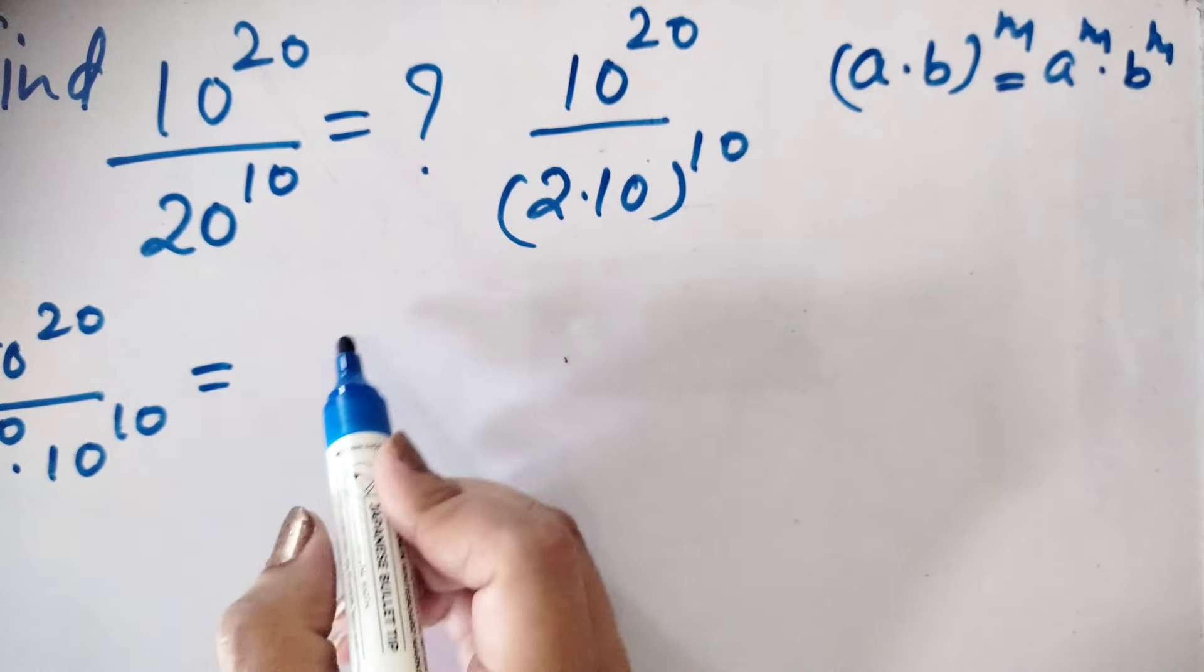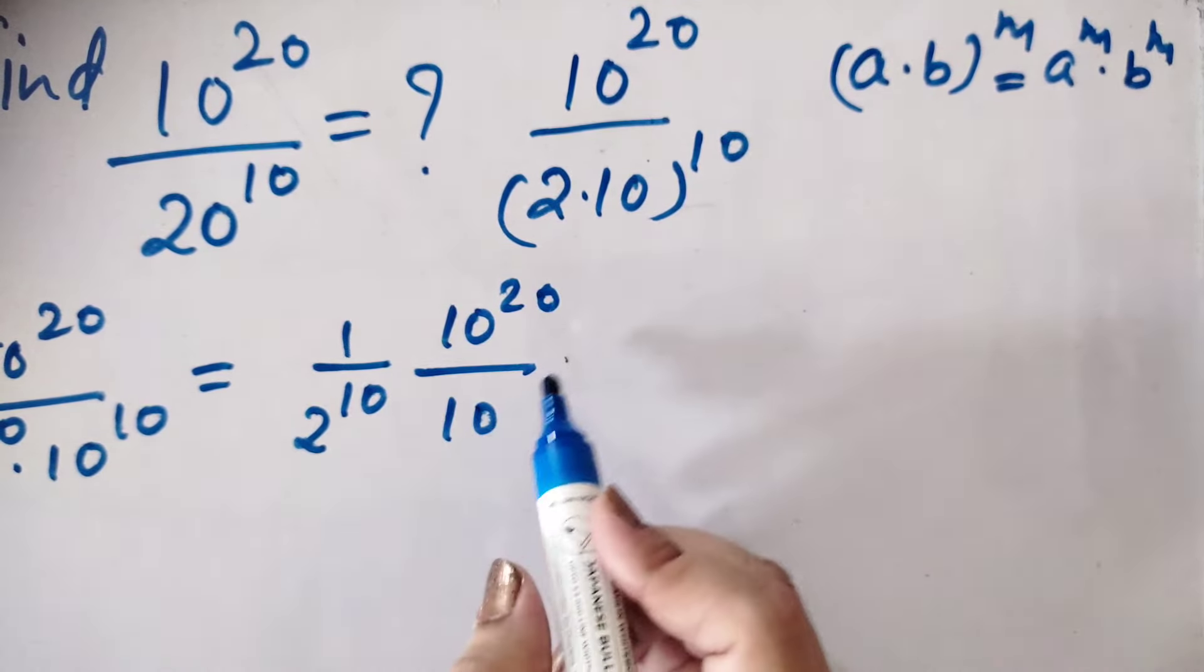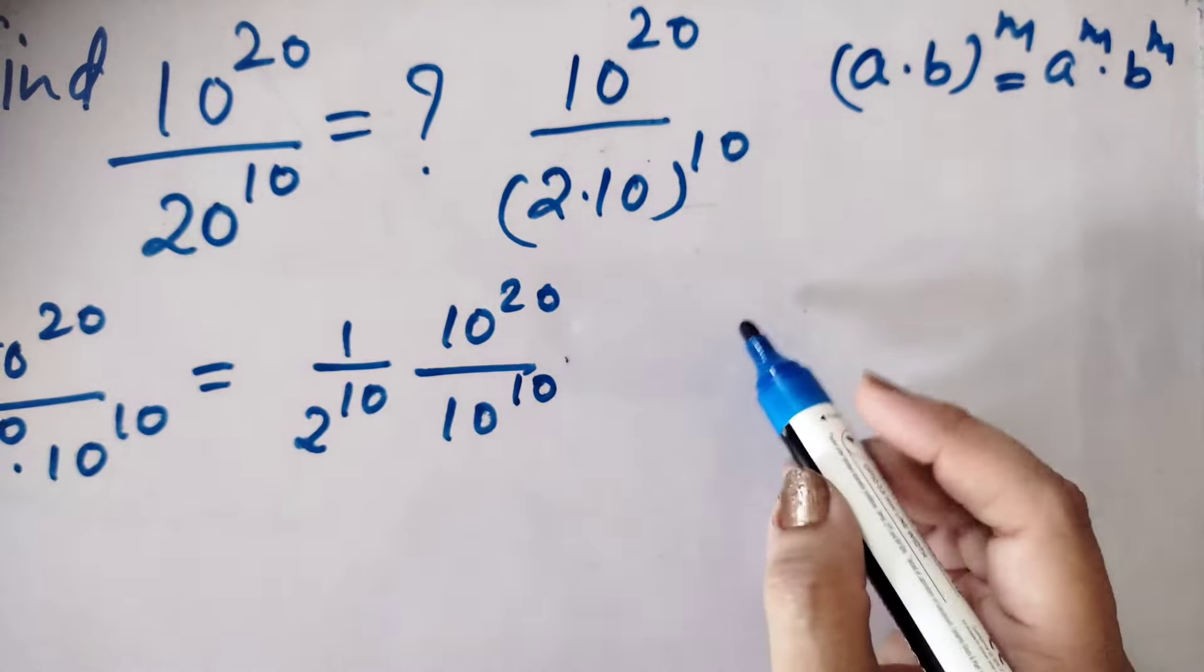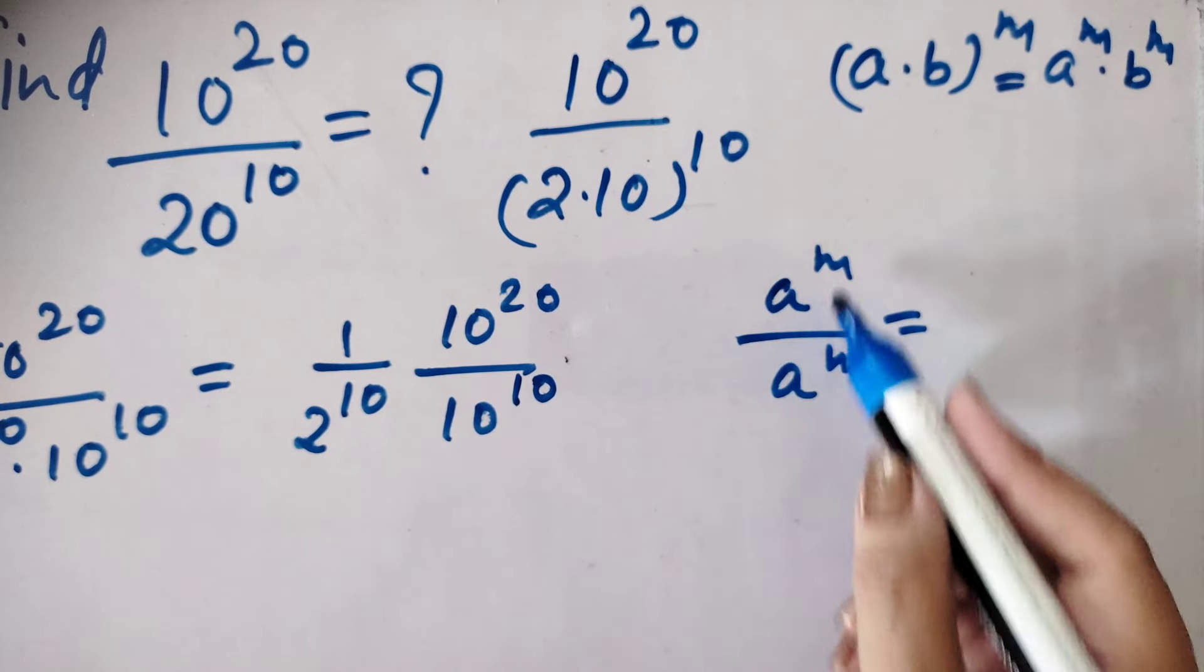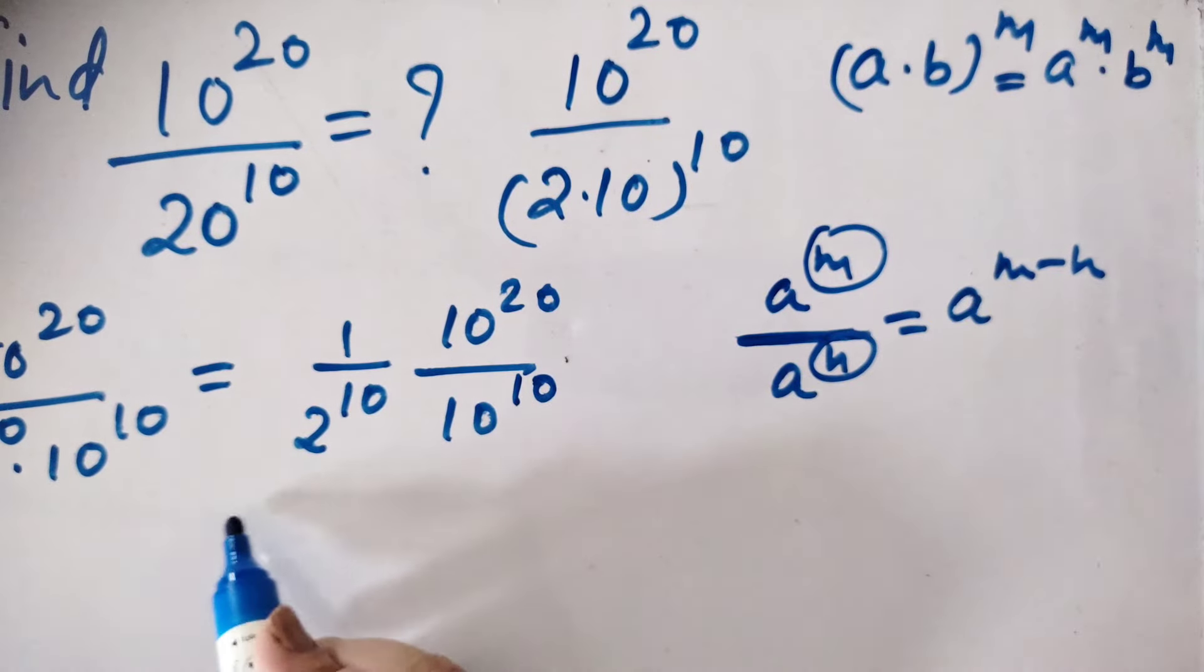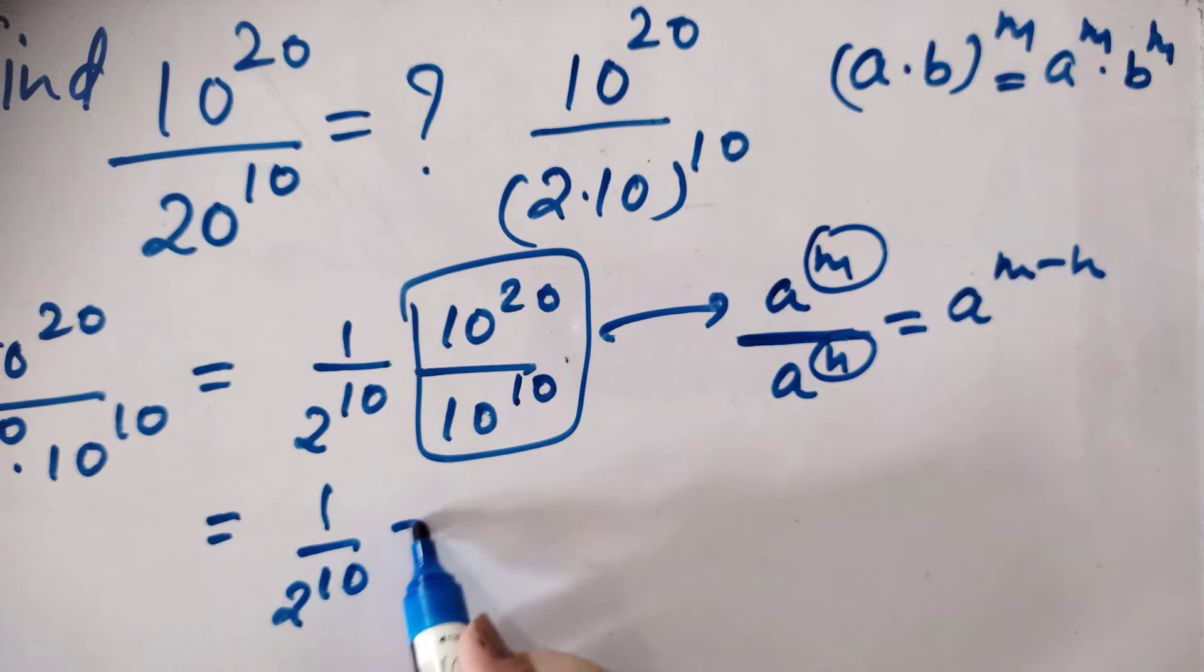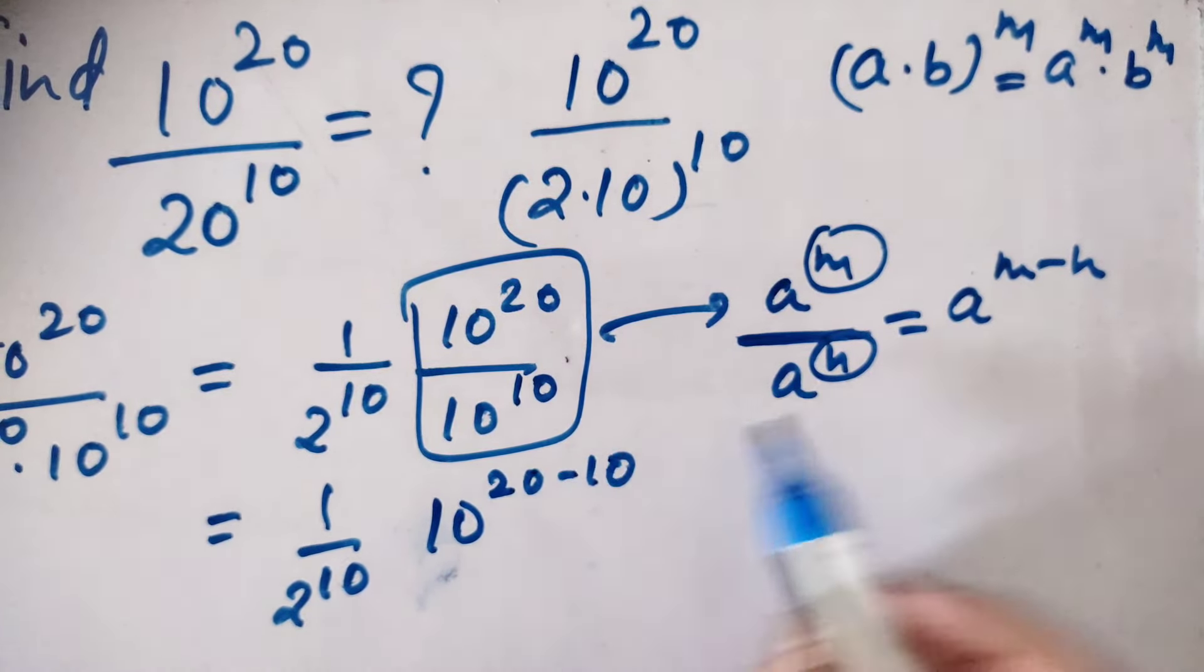So 10 power 20 upon 2 power 10, we can write separately power to both numbers 10 power 10. Now after that we will separate 1 upon 2 power 10 and 10 power 20 and 10 power 10. Now we are using law of exponent again, you can see the base are the same, but the relation is division. So this law says a power m and a power n, this power should be subtracted m minus n. So 1 upon 2 power 10 is as it is and we will write 10 power 20 minus 10, 20 minus 10 is equal to 10.